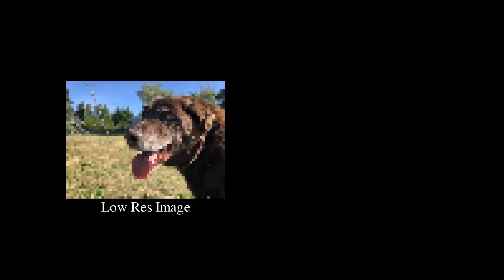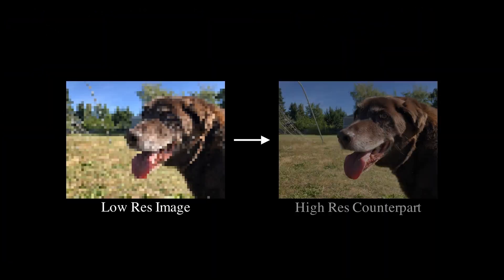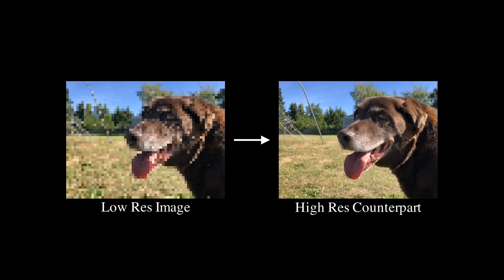Before we jump right into how to tackle this problem with machine learning techniques, we should define the problem a bit more formally. In theory, any image has a ground-truth, high-resolution version of itself. This allows us to define what it means for an image to be low-resolution in the first place, which will help us later when we want to define how to undo low-resiness.